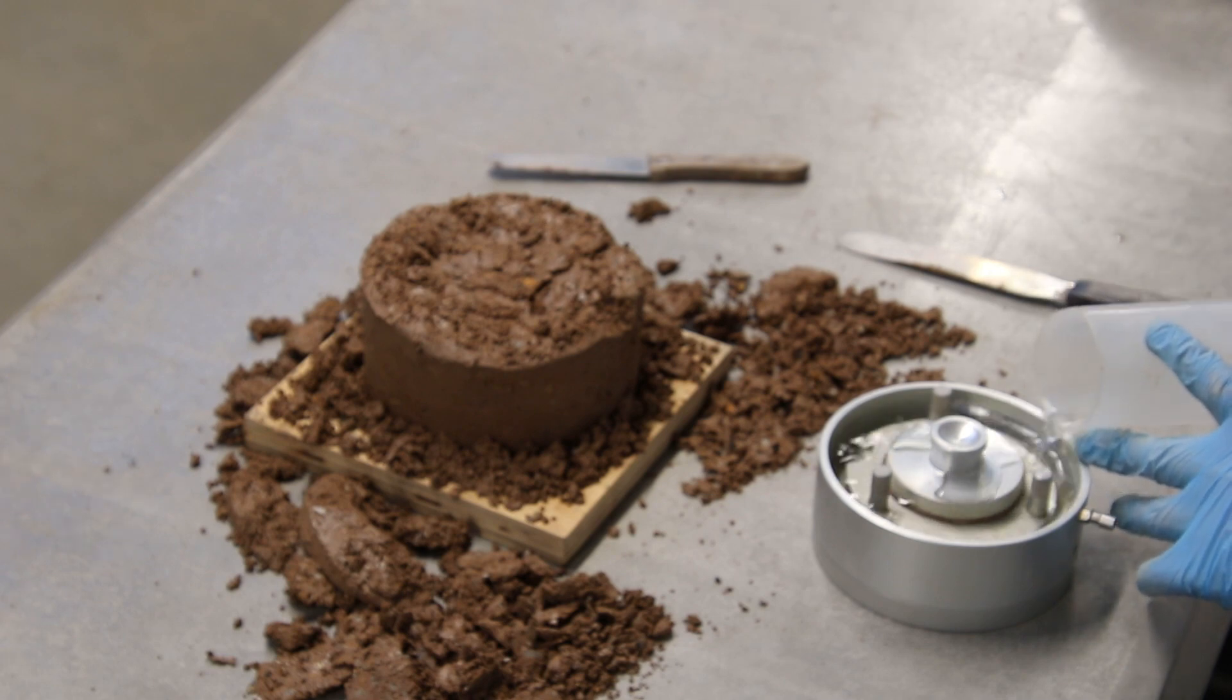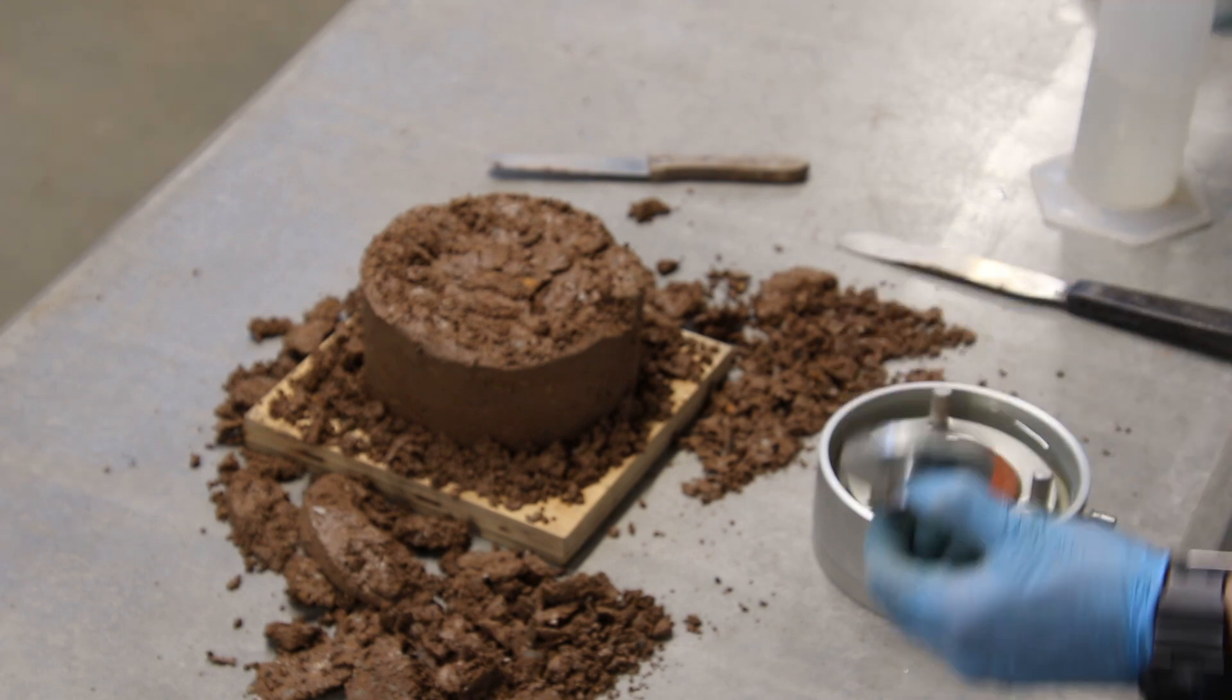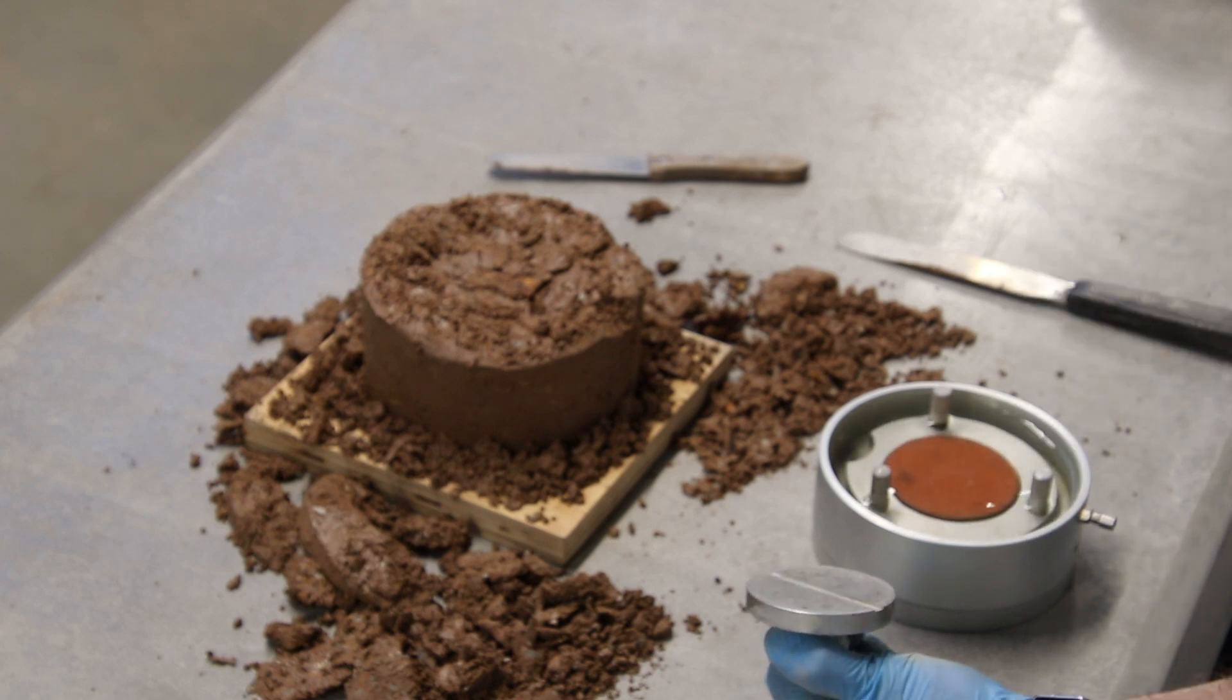Screw the ring assembly down tight to the cell. Place the top filter paper on the sample. Place the top porous disk on the filter paper. Place the top cap on the porous disk.